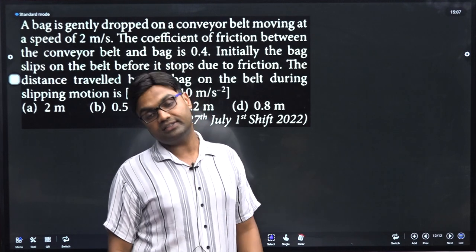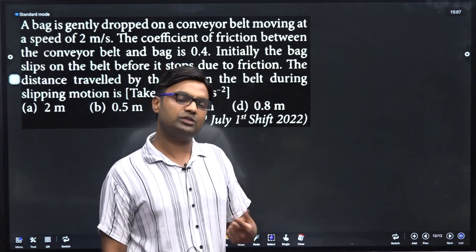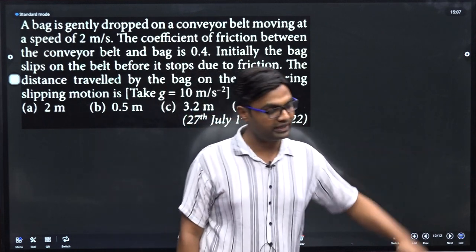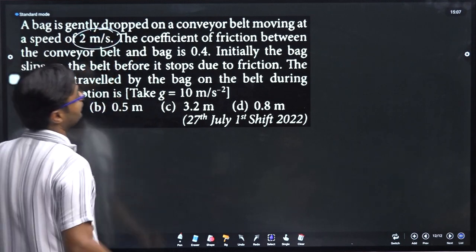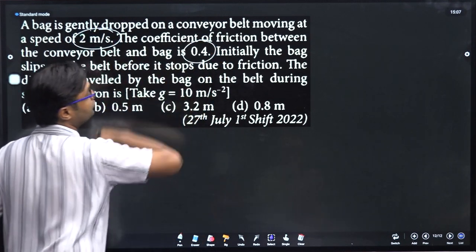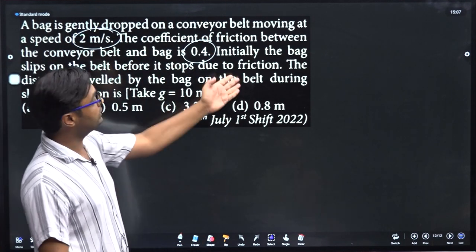Or if you want to go out, belt rest, ground rest, and block is like this. How much speed is it? 2 speed. And mu is 0.4. How much distance will it stop? This is the same thing.